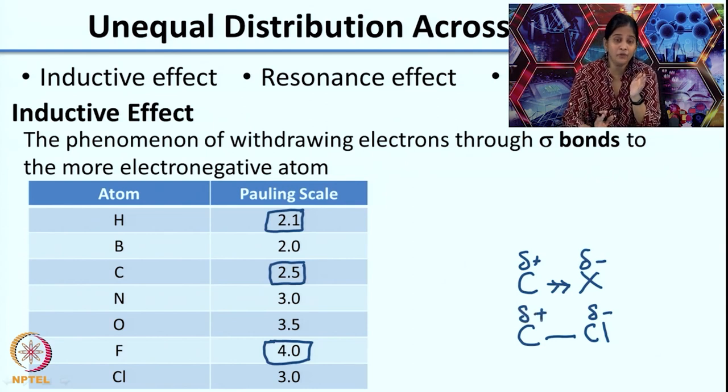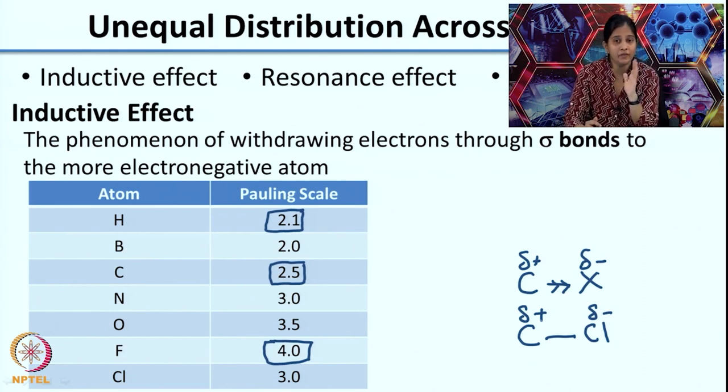What is important is understanding the relative electronegativity. Along the periodic table, as you go across the row, electronegativity increases — which is why fluorine is the most electronegative atom. As you go down the group, electronegativity decreases, which is why chlorine is less electronegative than fluorine. One key thing to remember about the inductive effect: it is only the pulling of electrons through a sigma bond — through a bond, not through space.